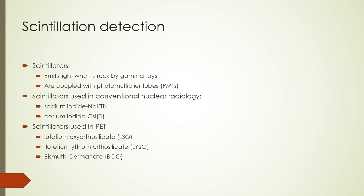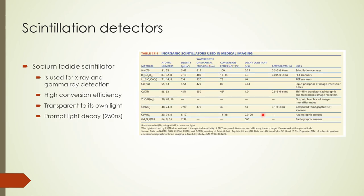Most scintillator-based detectors in nuclear medicine are operated in pulse mode and act as paralyzable systems. Algorithms may be incorporated to account for dead time losses. This table shows some properties that are desirable in scintillators. Sodium iodide is used in x-ray and gamma-ray scintillation cameras. It has 100% conversion efficiency with a fast decay constant of 250 nanoseconds and low afterglow. Other desirable properties for scintillators include high densities and high atomic numbers, which translates to high attenuation coefficients for gamma rays. Emission light should be matched to the spectrum of the detector.